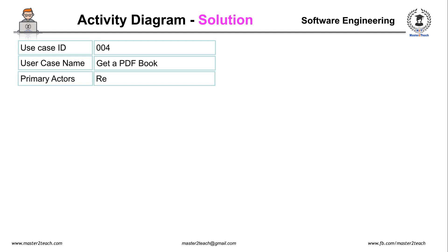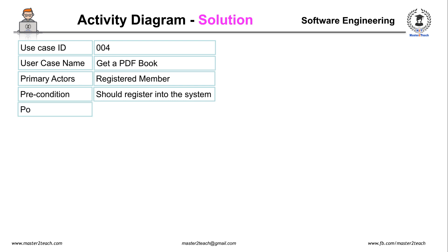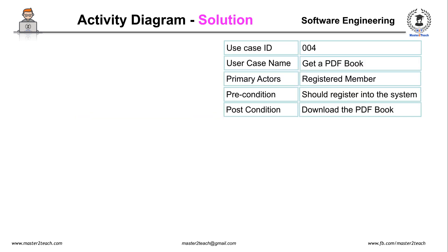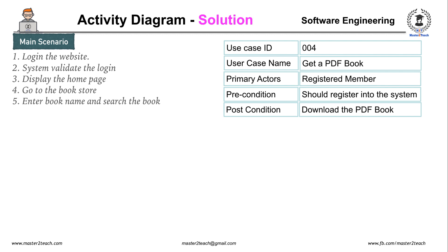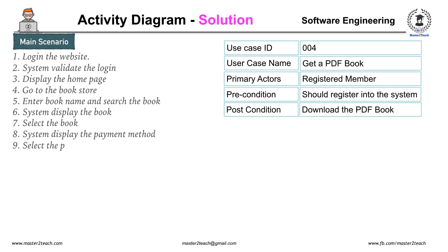Primary actor: Registered Member. Precondition: user is registered into the system. Post condition: download the PDF book. Main scenario: login to the website, system validates the login, display the home page, go to the bookstore, enter book name and search the book, system displays the book, select the book, system displays the payment method, select the payment, include the payment details.